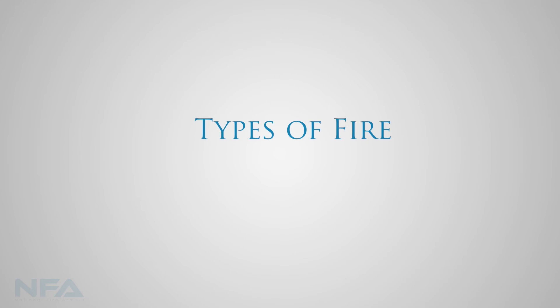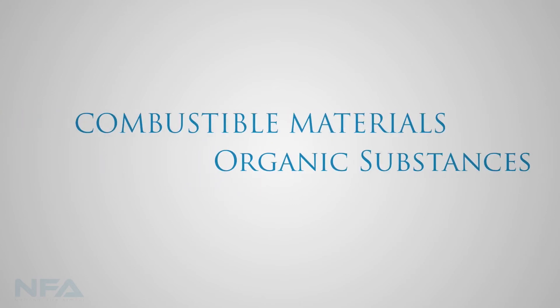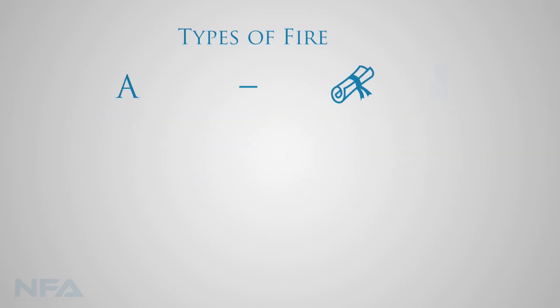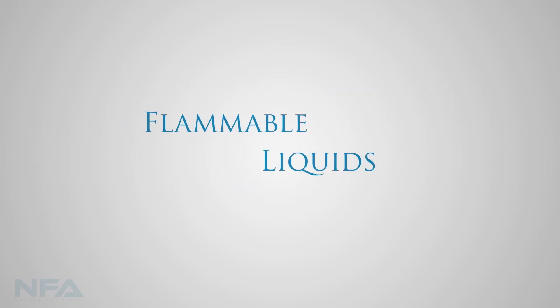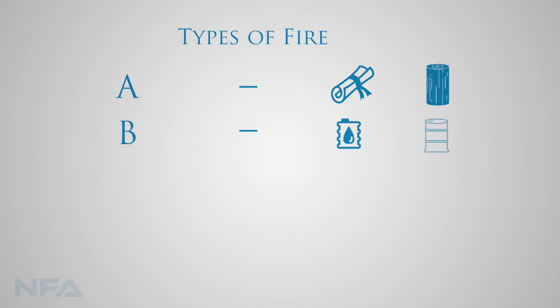There are five main classes of fire: A, B, C, D, and K. Class A fire involves combustible materials and organic substances like paper or wood, whereas a Class B fire involves flammable liquids like oil and petroleum products.